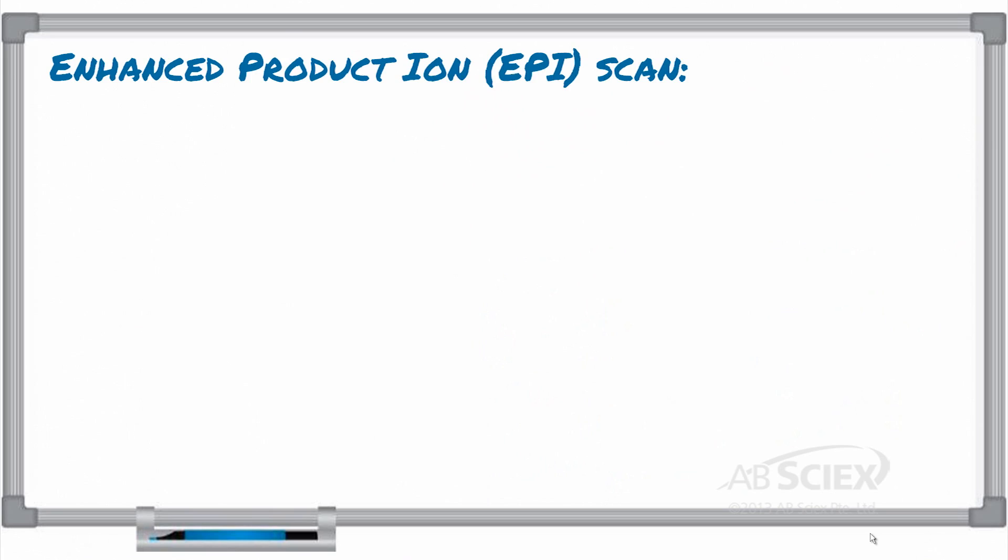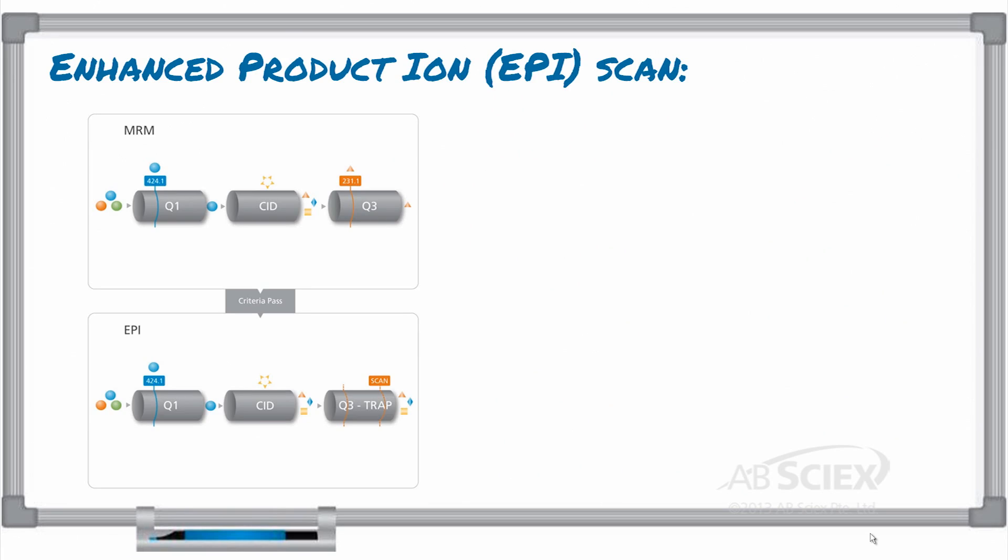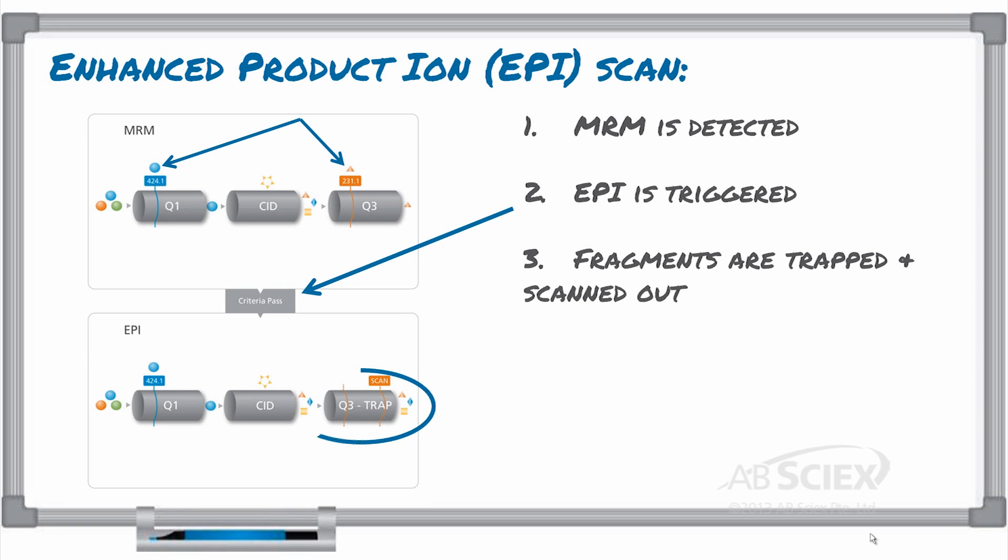When an MRM is detected, for example, parent ion 424.1 and fragment 231.1 above a set intensity threshold, an enhanced product ion scan, or EPI scan, is triggered. All fragments of the parent compound are then trapped in Q3, scanned out, and detected.